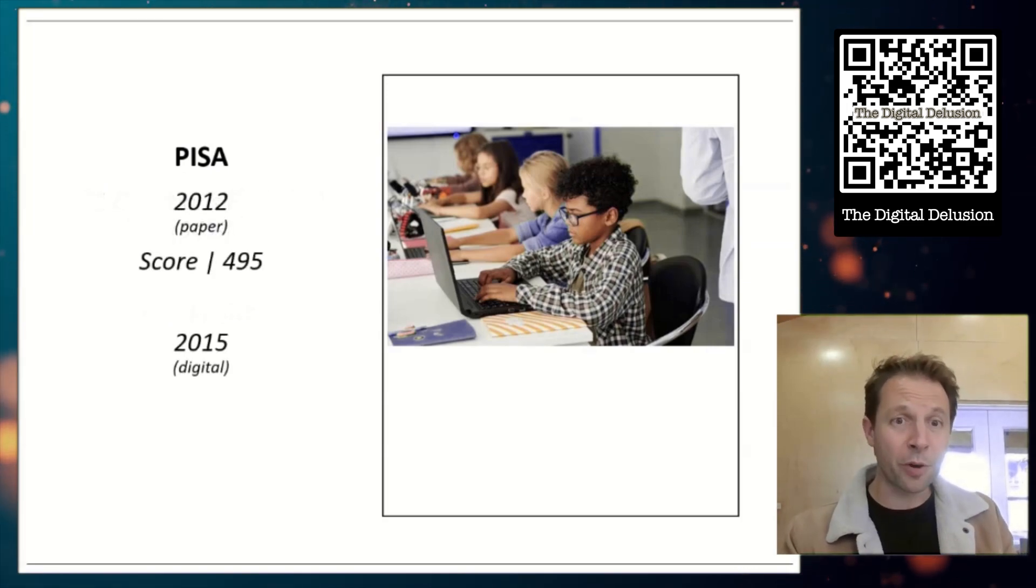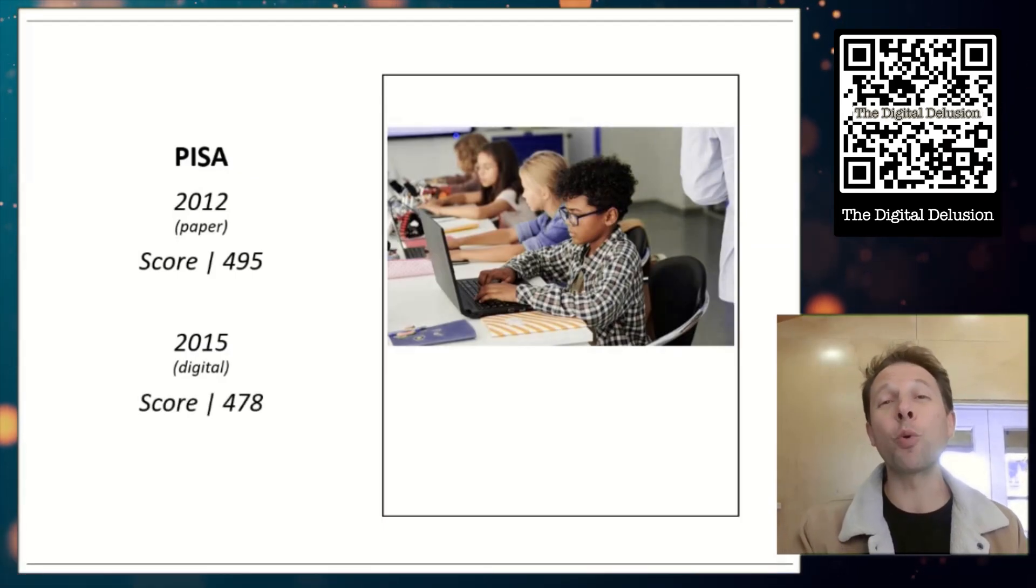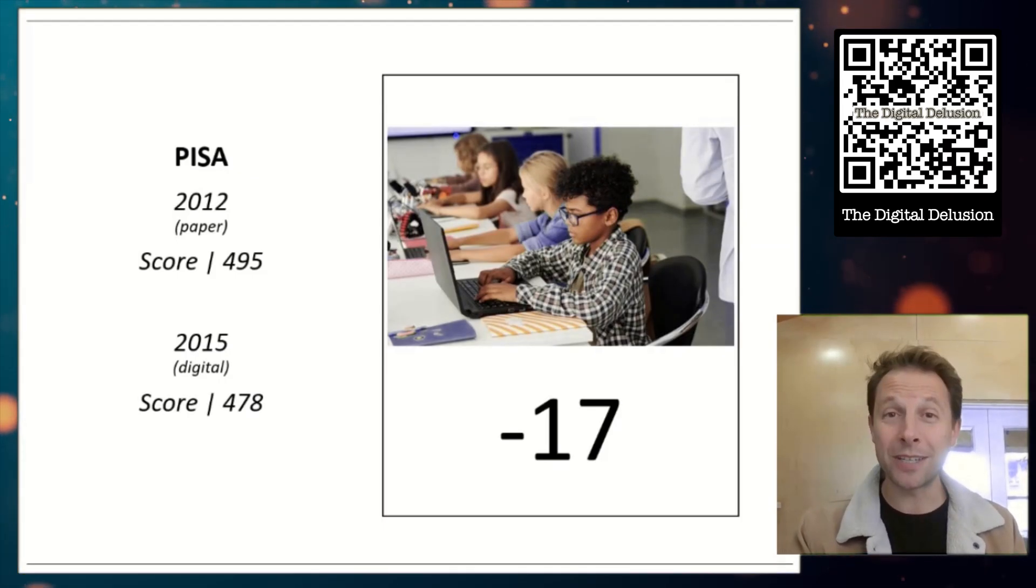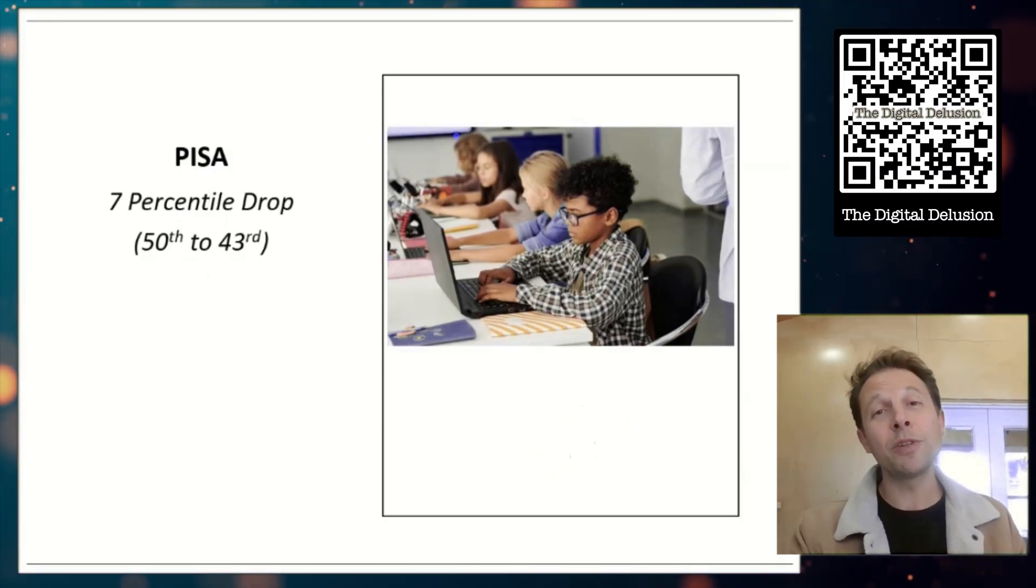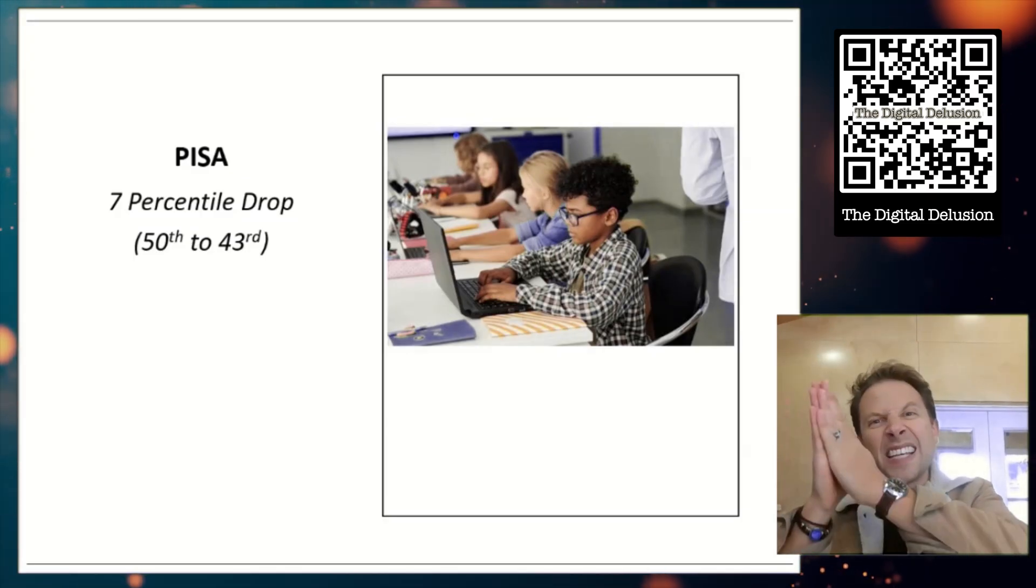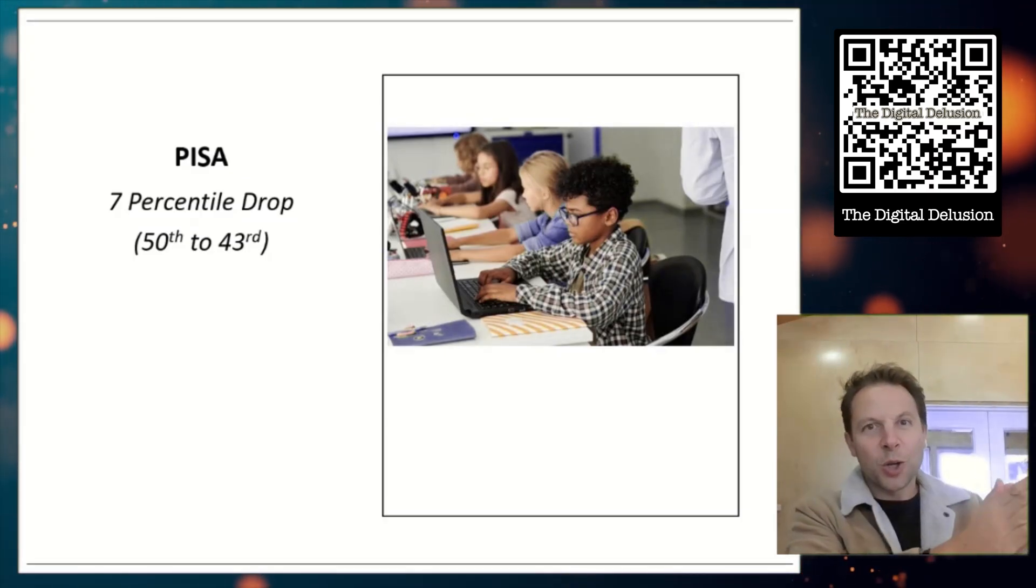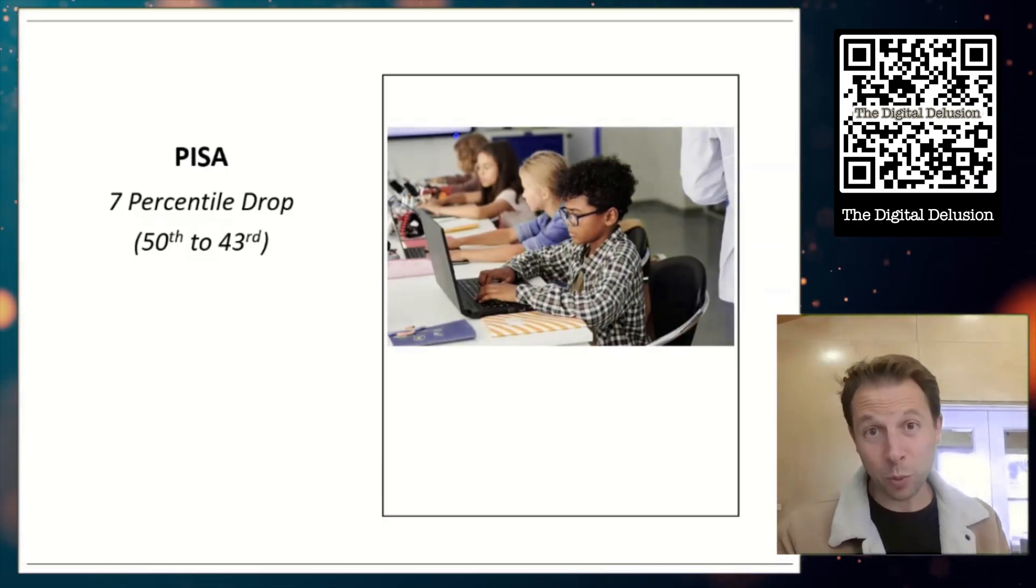But when you do some digging, you find those 91 questions and you plug them back into the test. It turns out kids did 14 points worse when they made the move from paper to digital. So let's go back to our scores. That means on the last paper version, we were looking at an average of 495. When it moved digital, we're really looking at an average of 478. That's a drop of 17 points. Now to put that into context, 17 points is the equivalent to a seven percentile drop. So kids who normally would score at the 50th percentile, simply by making them take a test online, they will drop to the 43rd percentile. That's how big the mode effect was there.